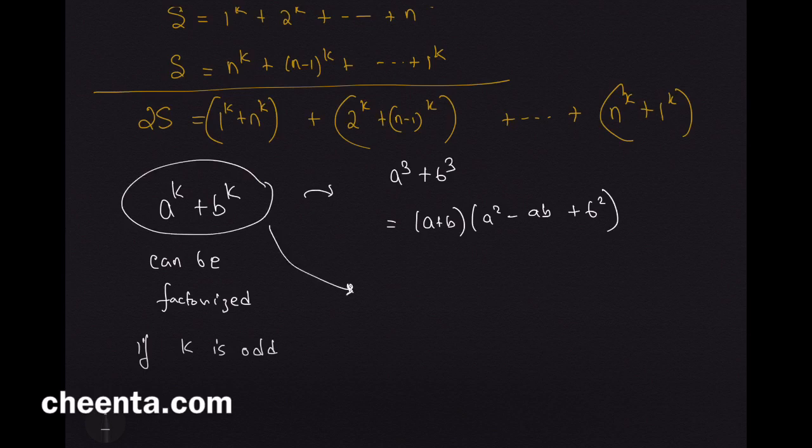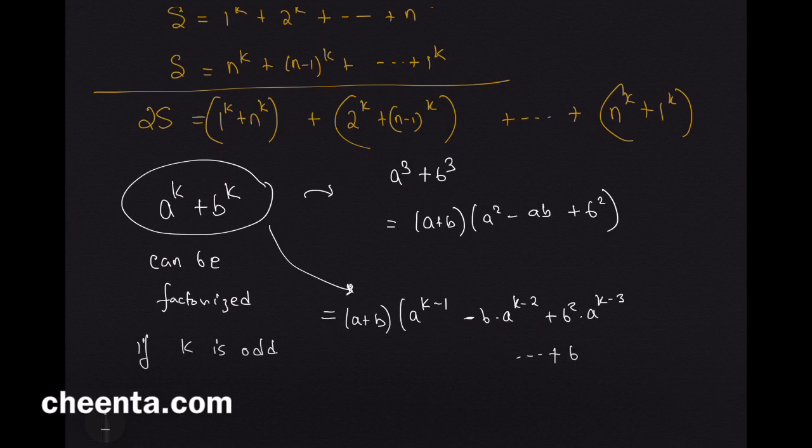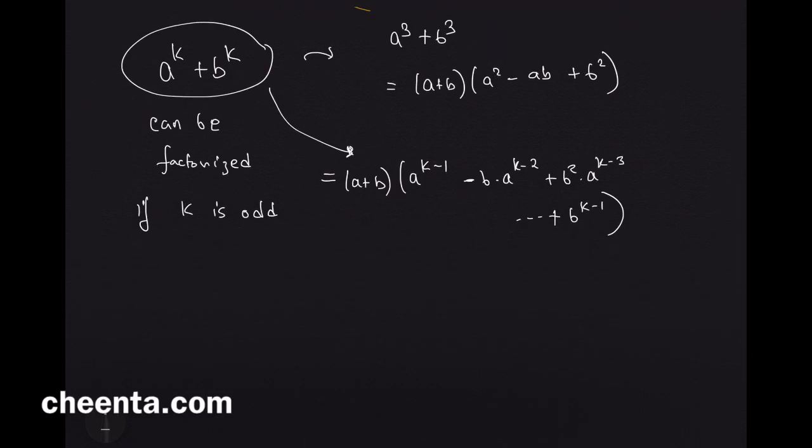The general formula is this is equal to a plus b times a to the power k minus 1 minus b times a to the power k minus 2 plus b square times a to the power k minus 3 etc. The last one would be b to the power k minus 1. How do we prove this? How do we prove this factorization?